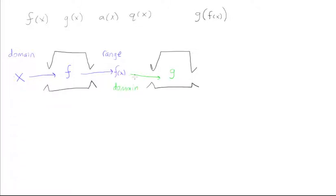And this becomes the domain of the function g, right? Because the domain is just the input. This is what we're putting into the function. And then we're going to get out g of f of x. f of x, and this is the range of g of x.